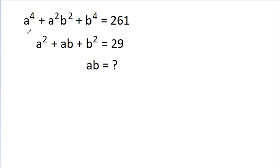In this video, we are given that a⁴ + a²b² + b⁴ = 261 and a² + ab + b² = 29, and we have to find the value of ab.